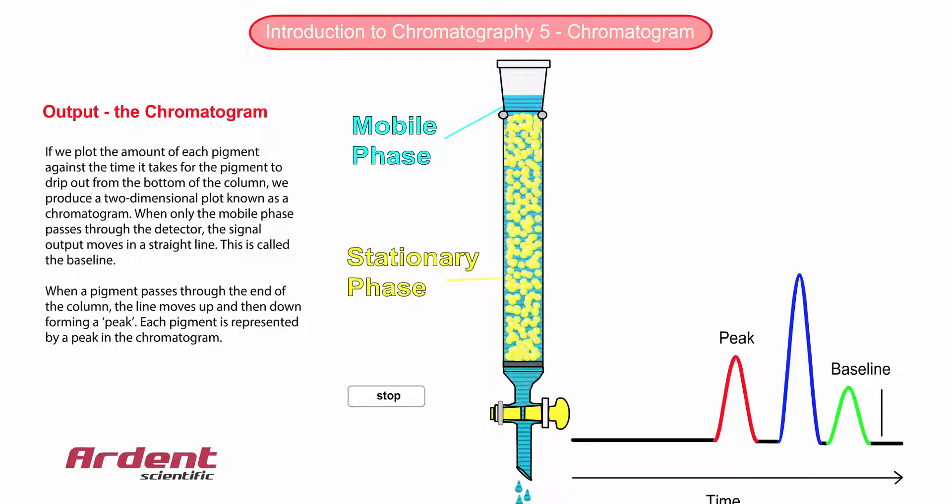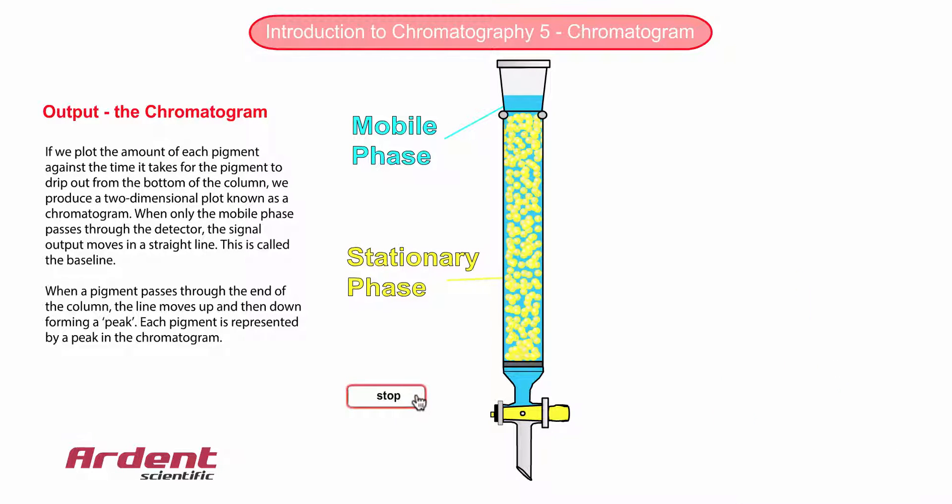The three components have different chemistries, and this leads to different amounts of interaction with the stationary phase. The red pigment drips out of the column first, and this can also be checked by looking at the time axis on the chromatogram.